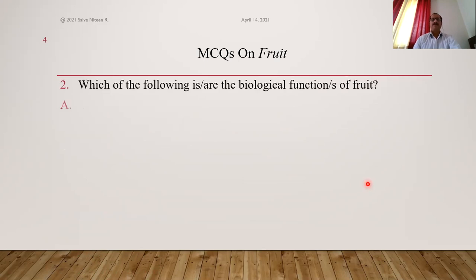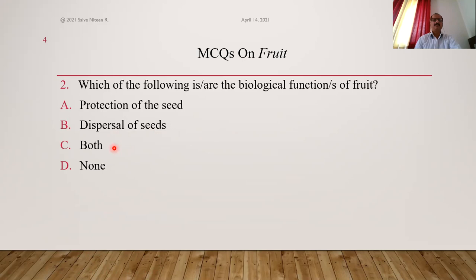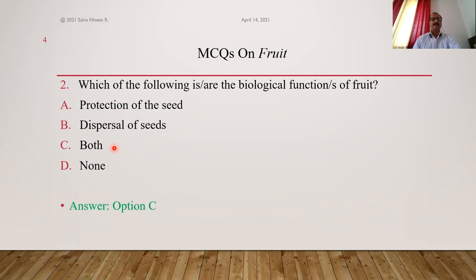Which of the following are the biological functions of fruit? Protection of seed and dispersal of seeds — both of these are functions of fruit. This is one of the reasons for the evolutionary success of angiosperms. C is the correct answer.